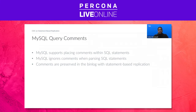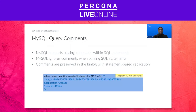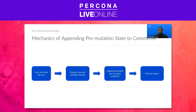MySQL supports placing comments within SQL statements. Comments can appear on a single line or span across multiple lines. MySQL ignores comments while parsing SQL statements; however, they are preserved in statement-based events. Here is a sample query with comments — you can see trace ID, application, and user ID fields wrapped in C-style comments, highlighted in blue. Now, it's not that straightforward — there are a couple of prerequisites. In order to append pre-mutation state to comments, the application layer must load the row into memory. You also need to lock the row to block other mutations. Then the loaded row is encoded to a portable format and appended to the comments.